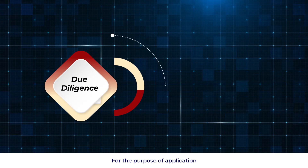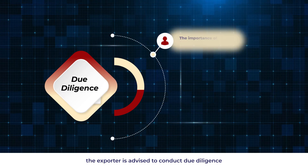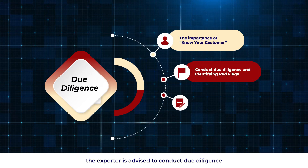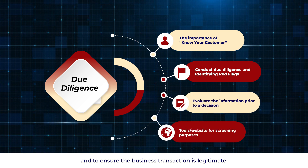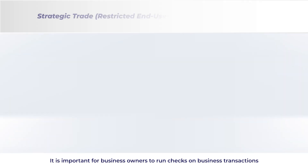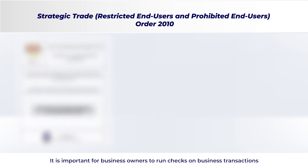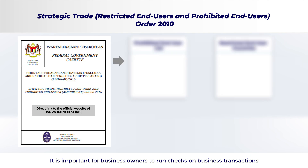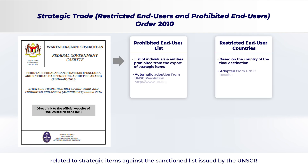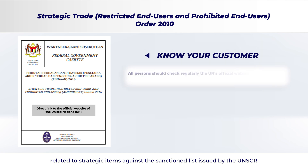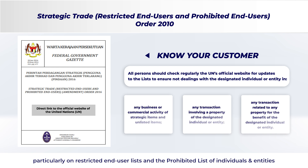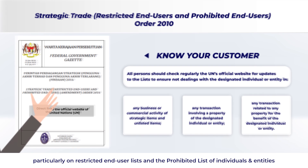For the purpose of application, the exporter is advised to conduct due diligence and to ensure the business transaction is legitimate. It is important for business owners to run checks on business transactions related to strategic items against the sanctions list issued by the UN SCR, particularly on restricted end user lists and the prohibited list of individuals and entities.